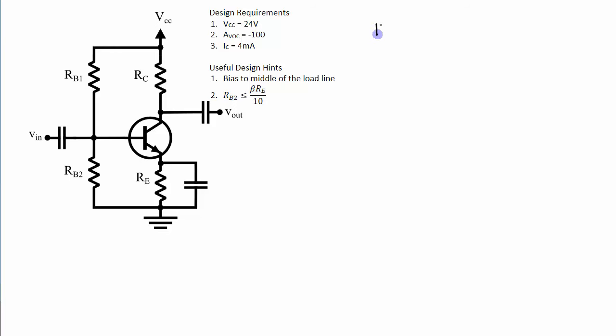So first of all I am designing it to have a collector current of 4 milliamps. That means right away I can figure out what my little RE value is, 26 millivolts over IE and IE and IC are approximately the same. So now I know what my little RE value is, the internal resistance at the emitter of the transistor.